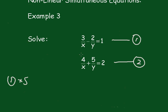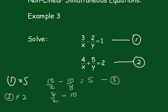I'm going to multiply this by 5, that becomes 15 on x minus 10 on y equals 5. We'll call that equation 3. And we'll take equation 2 and we'll multiply that 1 by 2, that gives me 8 on x plus 10 on y is equal to 4. We'll call that equation 4.